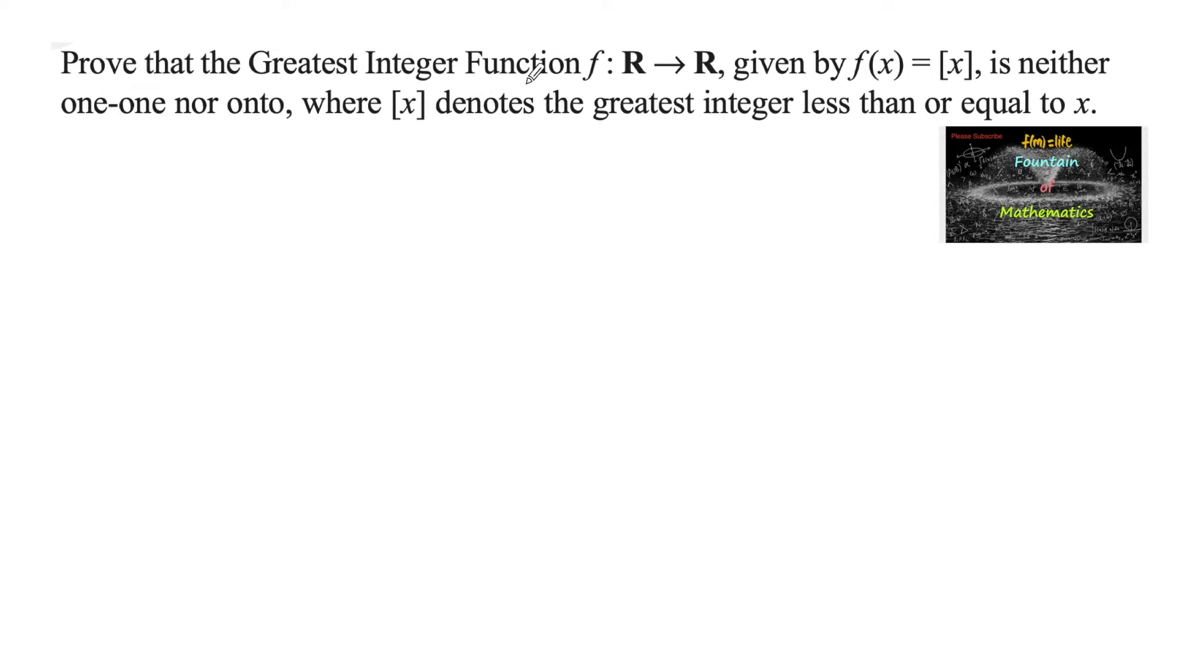Prove that the greatest integer function f: R → R, given by f(x) = [x], is neither one-to-one nor onto, where [x] denotes the greatest integer less than or equal to x.